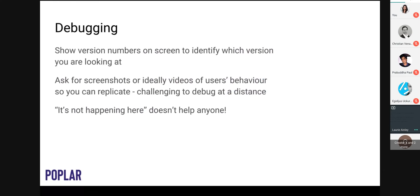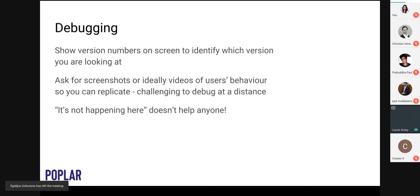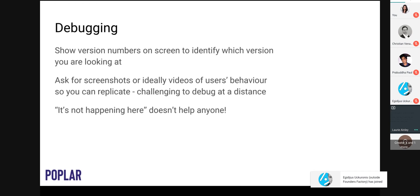On debugging: it's sensible to include the version number on screen while you're developing. If someone sends you a screenshot of something wrong and you've been iterating — say version 8 published yesterday and version 9 today — you can clearly see which version was responsible for the issue. Always ask for screenshots, or ideally a video of an issue when someone reports it. It's very difficult to understand what's going on if you can't see someone's device.